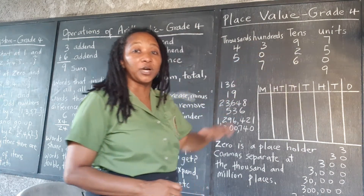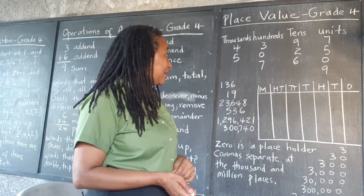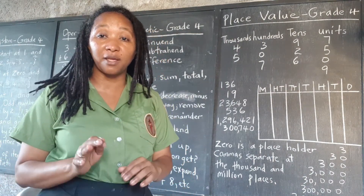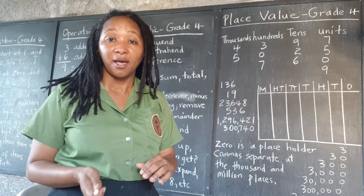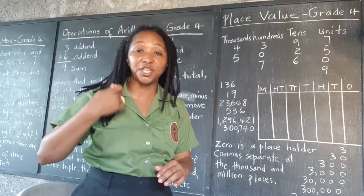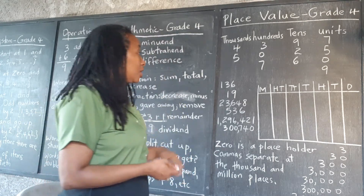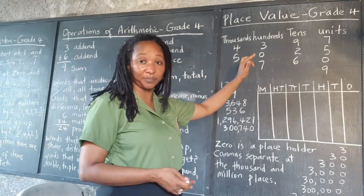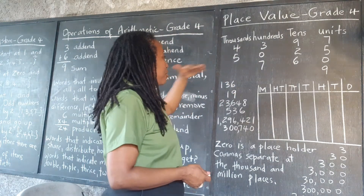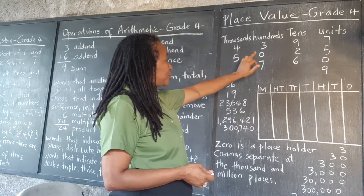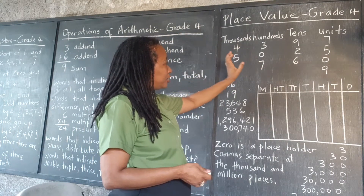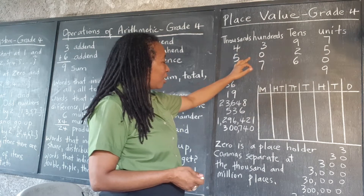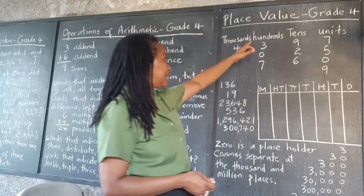In the place value system, the zero is of crucial importance because the zero is used to hold the place when there is no digit in that place. So for five thousand and twenty-five, there are no hundreds.